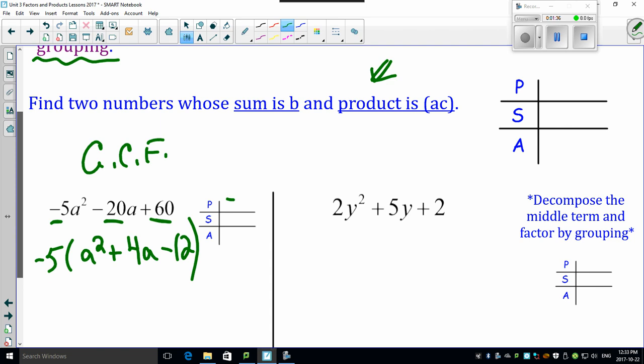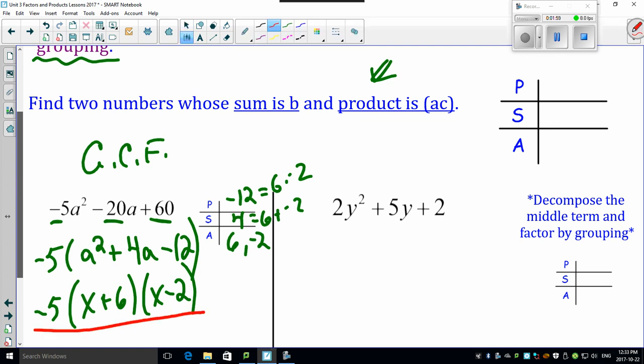That's gonna save you a lot of problems. Product is -12, sum is 4. That's 6 and -2. There's your 6, there's your -2. There's your first term up front, there's your (x + 6), there's your (x - 2). That was a PSA 1, nothing different than what we've done for the last six podcasts or so.